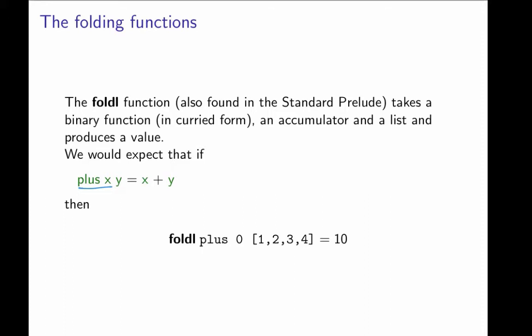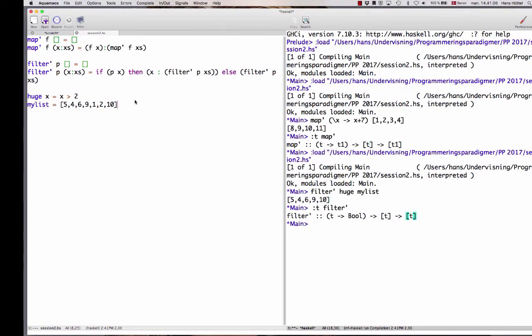So let's see how we can implement this in Haskell as foldl prime. Foldl prime is a function that takes a function f, an initial value a, and some list, and then applies f successively to the elements of the list. If there are no elements in the list, we just return the initial value.